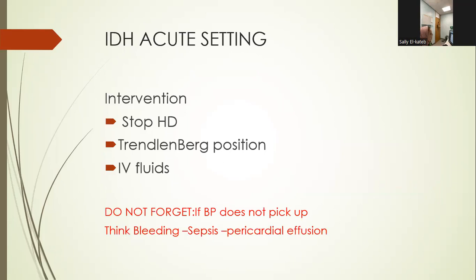In an acute setting of intradialytic hypotension — for more junior staff who may know nothing about the patient — if the patient has low blood pressure and all the standard measures have been tried, follow ABC: stop the HD session, turn the patient into the Trendelenburg position, and give IV fluids within reason. Don't forget that if you do all this and blood pressure does not pick up, you must exclude dangerous causes: check for bleeding anywhere on exposure, and think about sepsis — is the patient tachycardic, has a rash, or a high temperature — and also consider pericardial effusion.